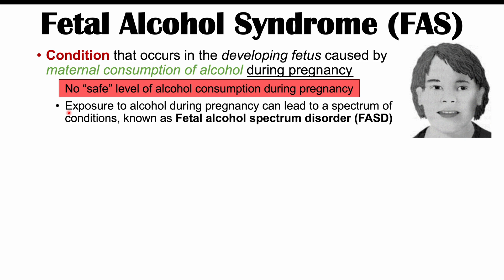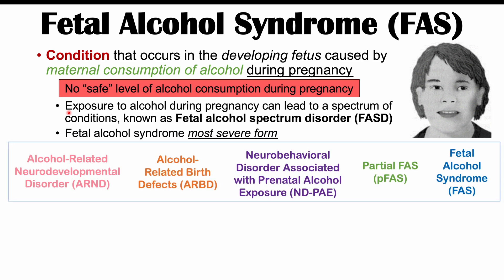Fetal alcohol syndrome is only one condition in the spectrum, but it is the most severe form. The other disorders in the spectrum include alcohol-related neurodevelopmental disorder (ARND), alcohol-related birth defects (ARBD), neurobehavioral disorder associated with prenatal alcohol exposure (NDPAE), partial fetal alcohol syndrome (PFAS), and fetal alcohol syndrome (FAS), which is the most severe form.